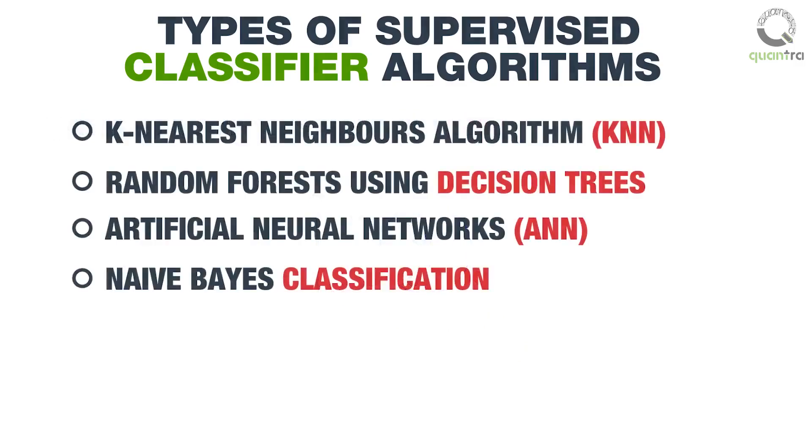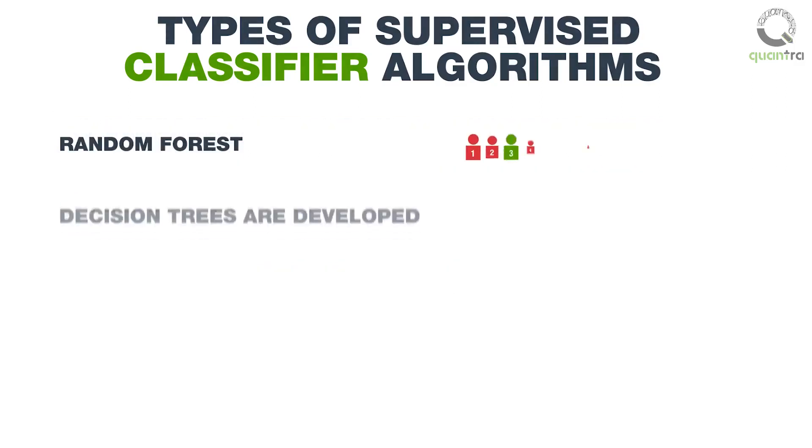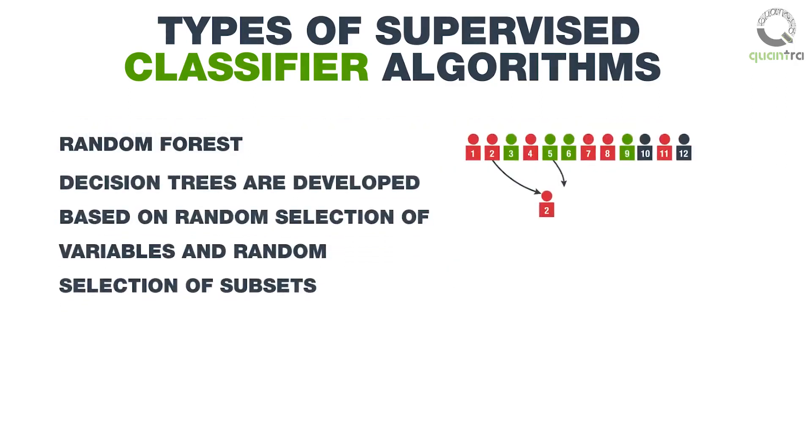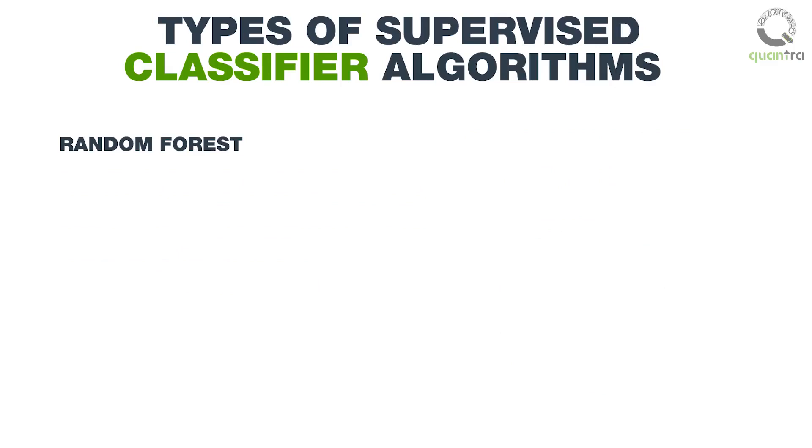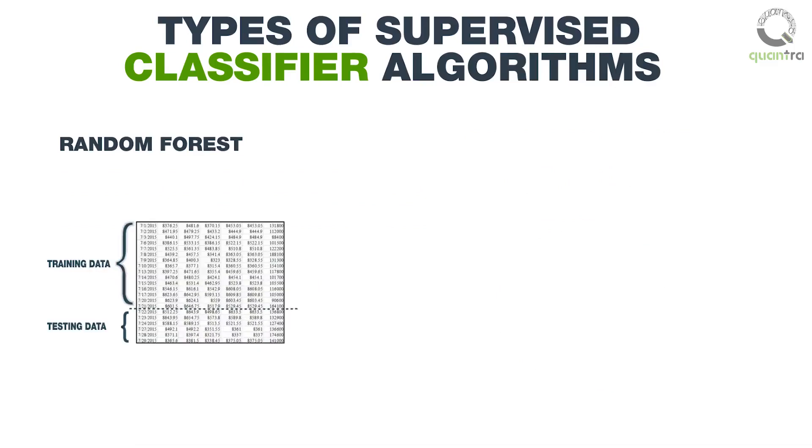The next classifier algorithm that we will discuss is Random Forest. In this method, Decision Trees are developed, based on random selection of data items which are called variables, and random selection of subsets which are small groups of the variables taken from the data. At first, an algorithm is trained on a training data set, which includes processing an input according to the algorithm, such that the output matches with the actual results.